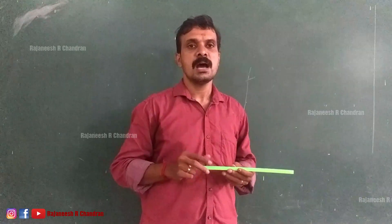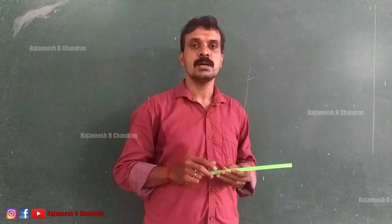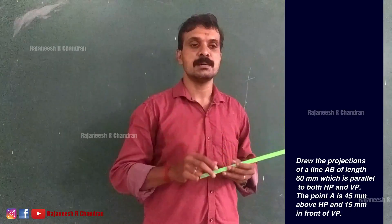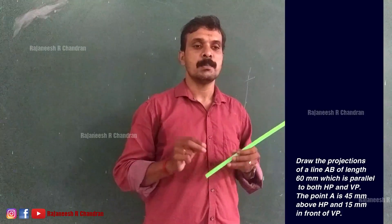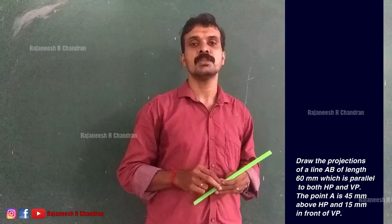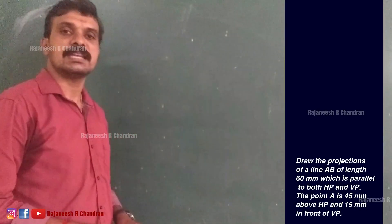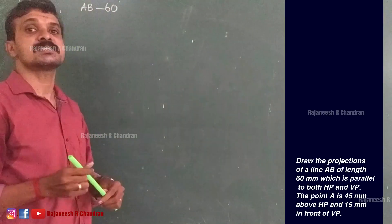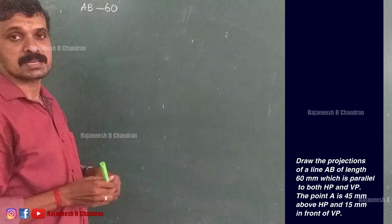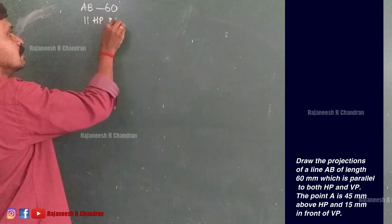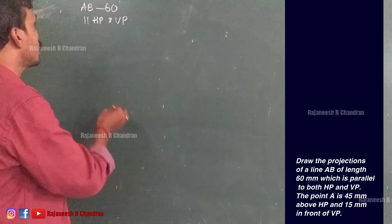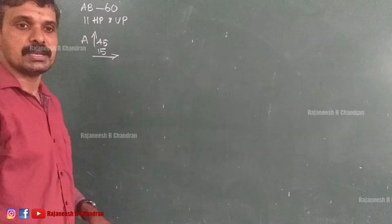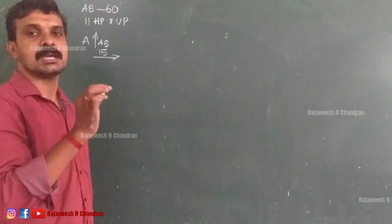This condition can be clearly understood by doing a problem. Draw the projections of a line AB of length 60 mm which is parallel to both HP and VP. The point A is 45 mm above HP and 15 mm in front of VP. So, the true length of line AB is 60 mm, and the location of point A is 45 mm above HP and 15 mm in front of VP.